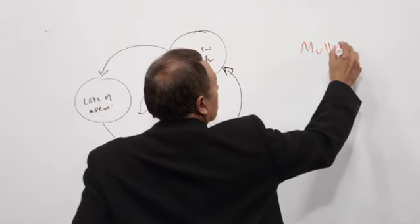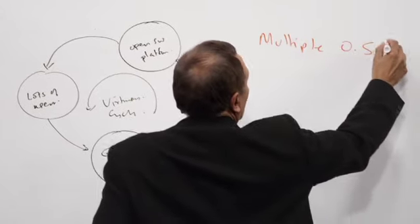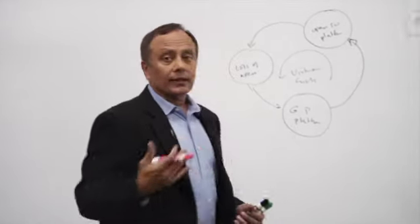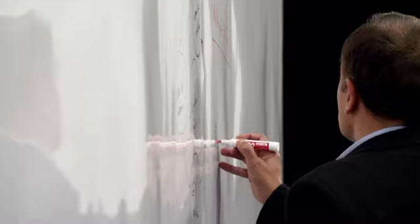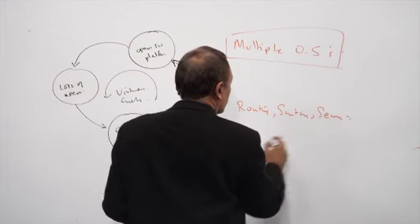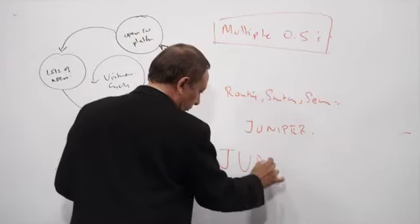Most networking vendors have multiple operating systems. Well, the only company that has a single operating system across routing, switching, and security is Juniper. And that operating system is Junos.